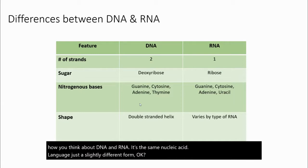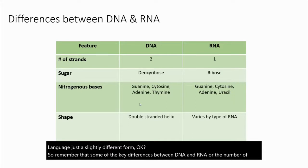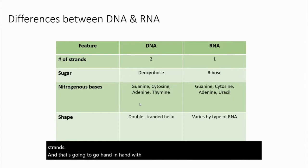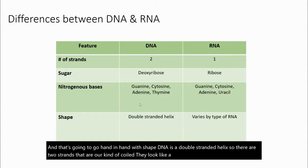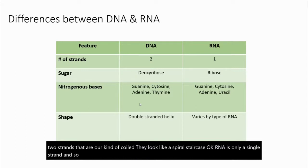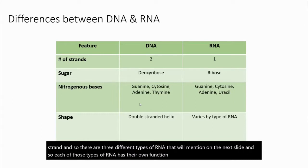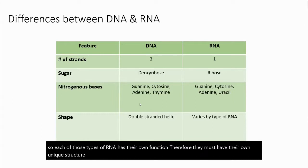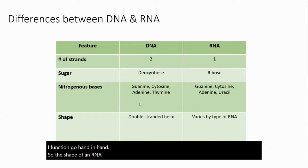Some of the key differences between DNA and RNA are the number of strands, and that's going to go hand in hand with shape. DNA is a double-stranded helix, so there are two strands that are kind of coiled. They look like a spiral staircase. RNA is only a single strand, and there are three different types of RNA, and so each of those types has their own function. Therefore, they must have their own unique structure because structure and function go hand in hand. So the shape of an RNA molecule depends on what type of RNA molecule it is.